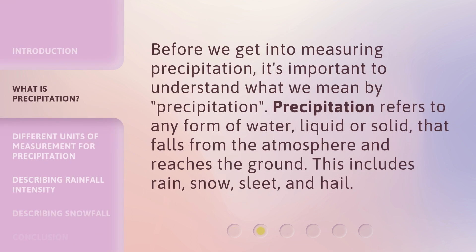Before we get into measuring precipitation, it's important to understand what we mean by precipitation. Precipitation refers to any form of water, liquid or solid, that falls from the atmosphere and reaches the ground. This includes rain, snow, sleet, and hail.